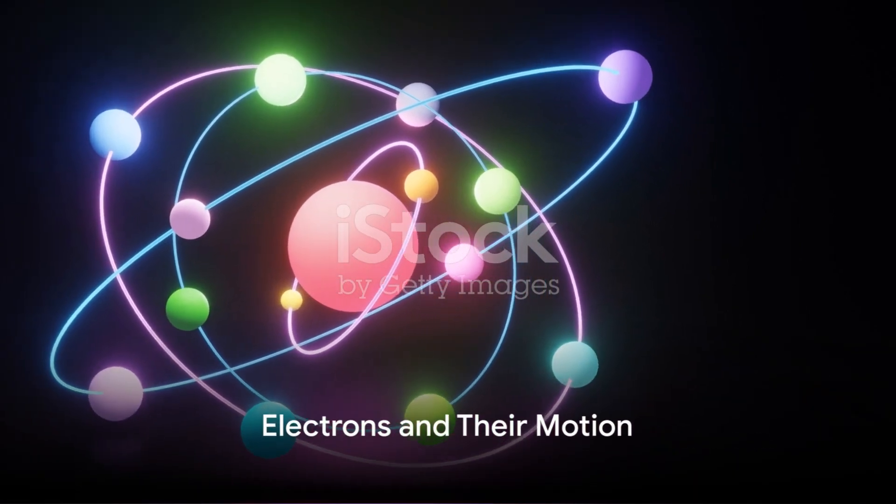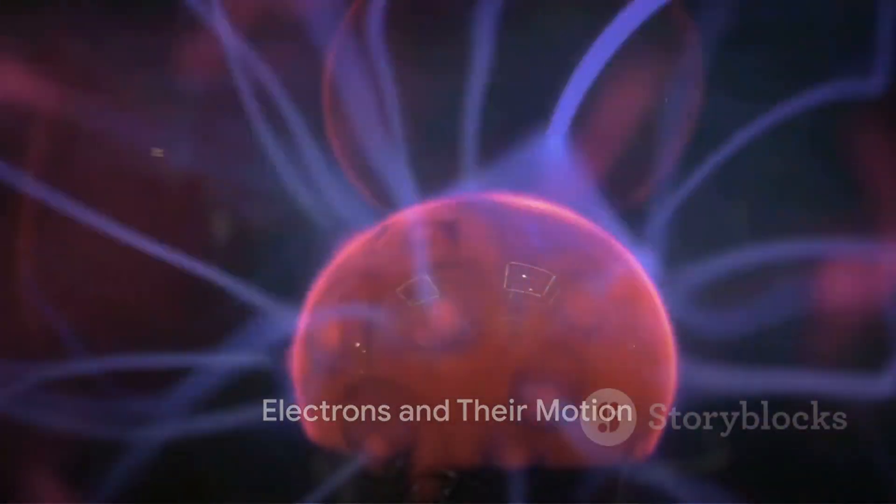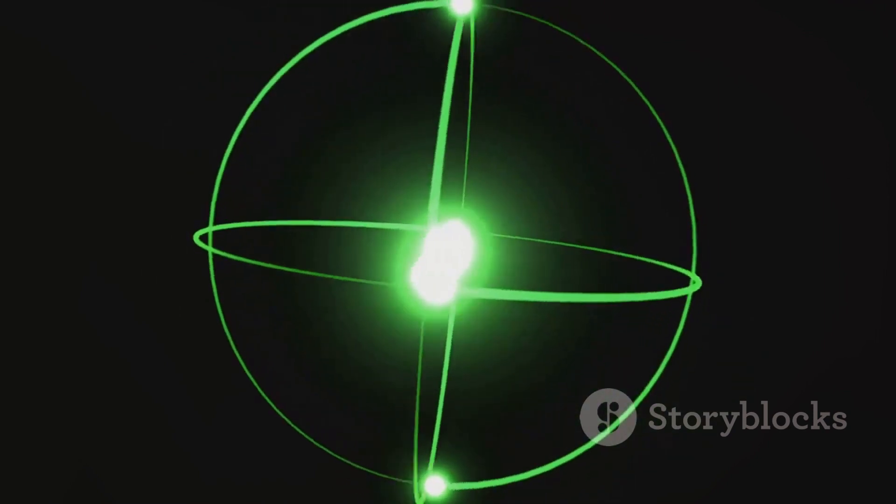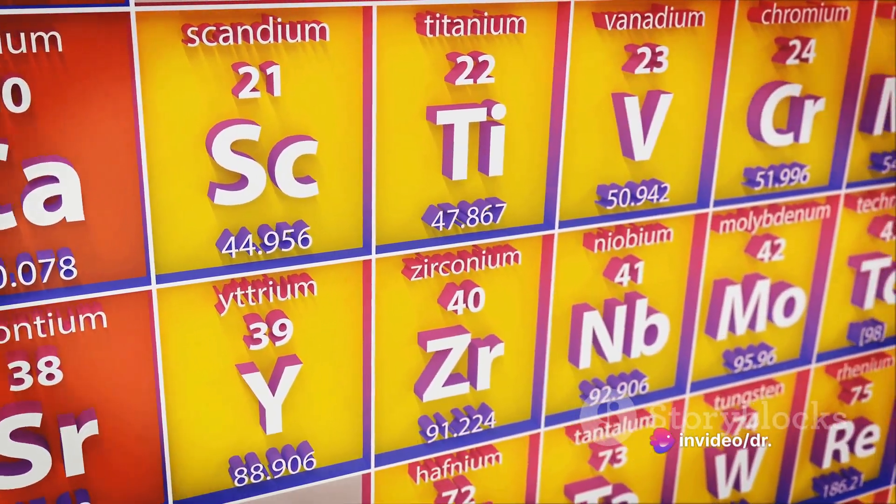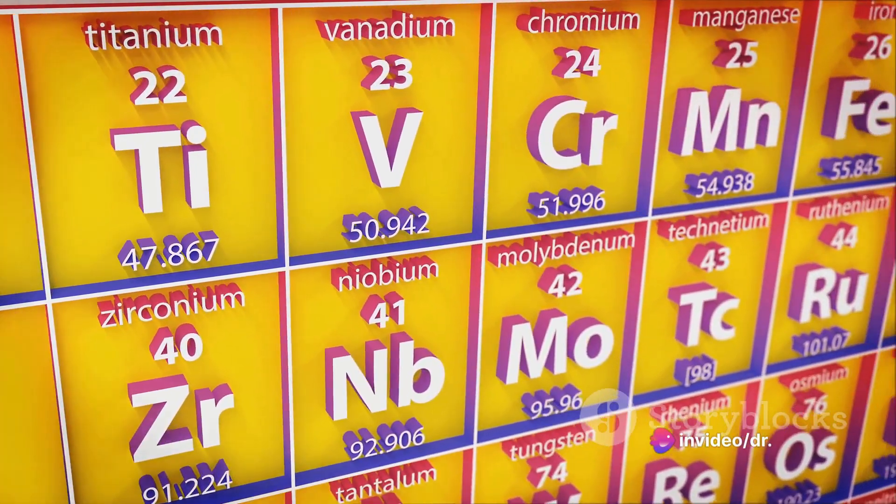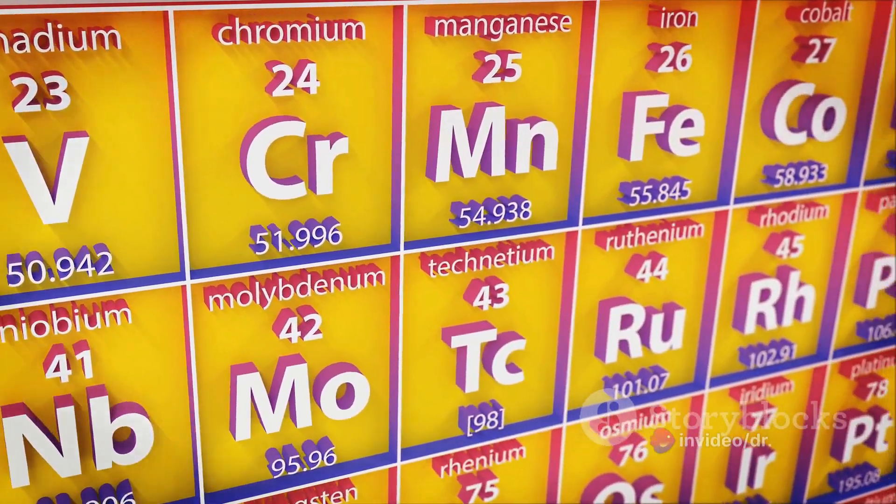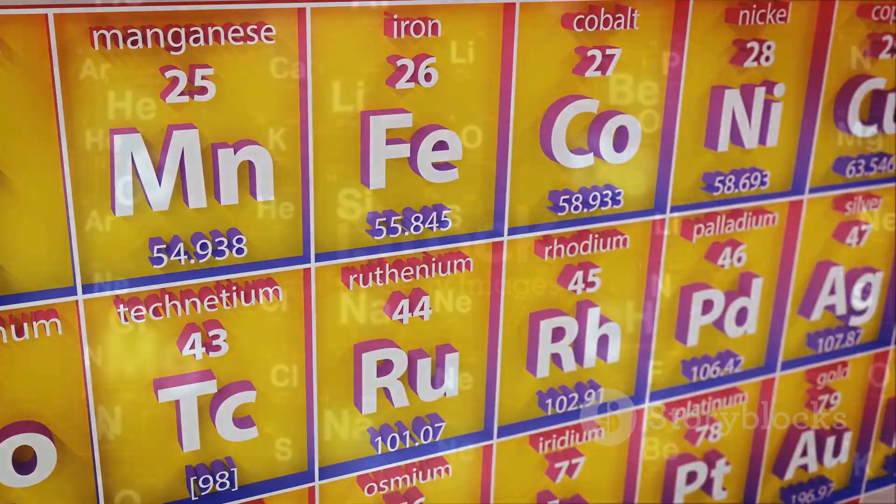Orbiting the nucleus are electrons—negatively charged particles. They're like comets whizzing around the nucleus in a constant state of motion. The number of electrons in an atom is usually equal to the number of protons, balancing out the positive charge with their negative charge.